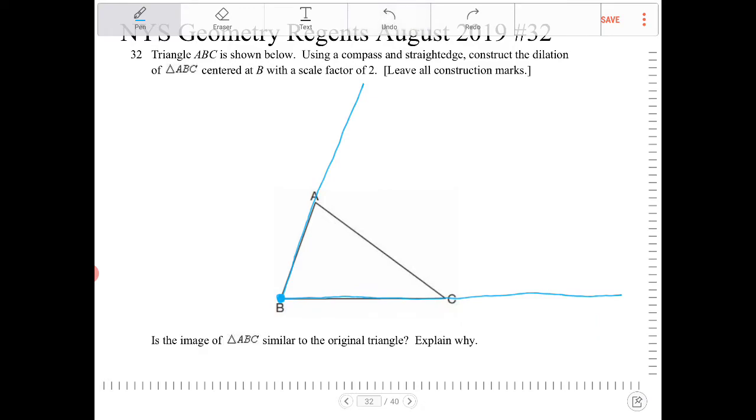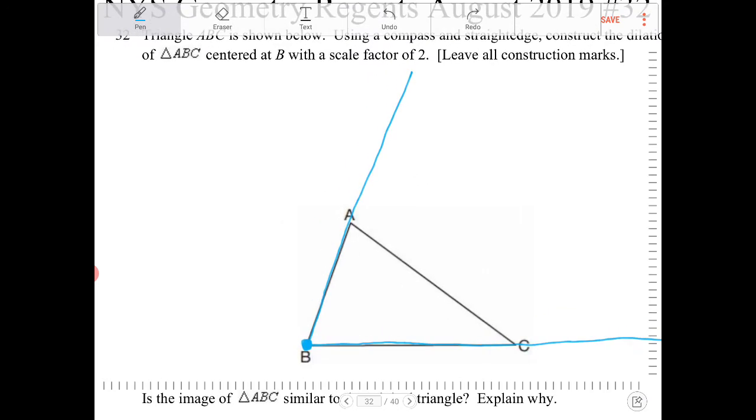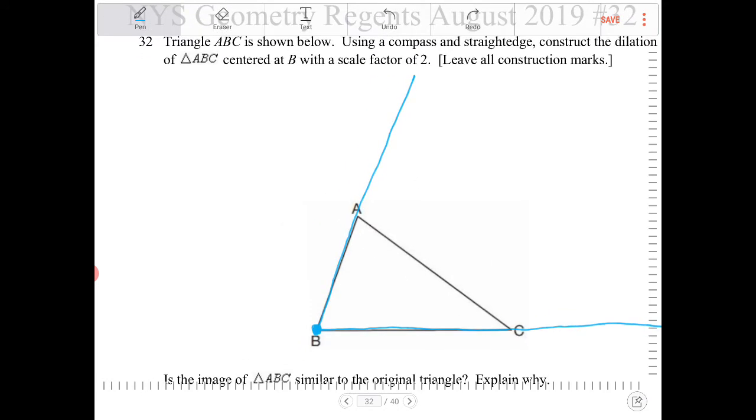How are we going to locate where A prime and C prime is? Well, A prime is going to be twice the length, or should I say A prime B is going to be twice as long as AB.